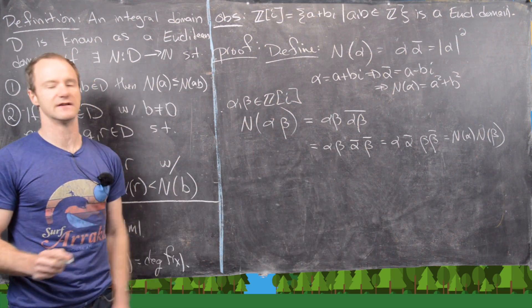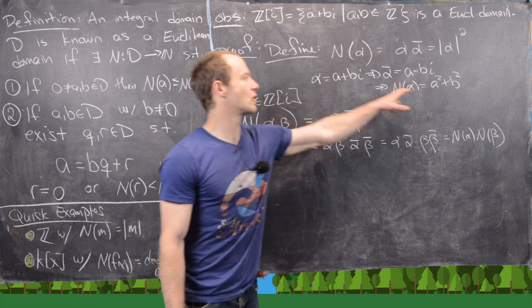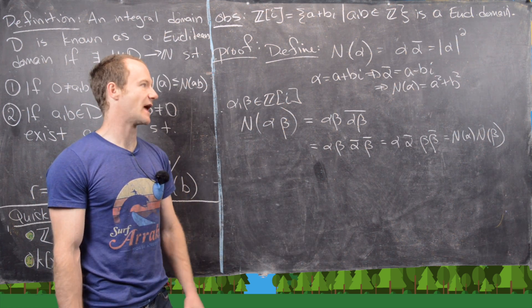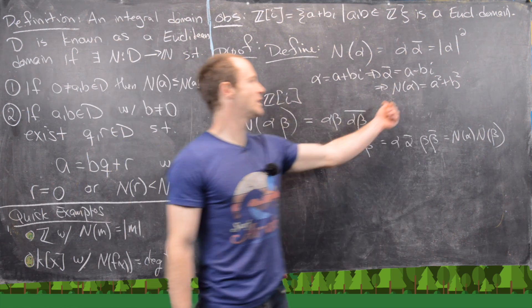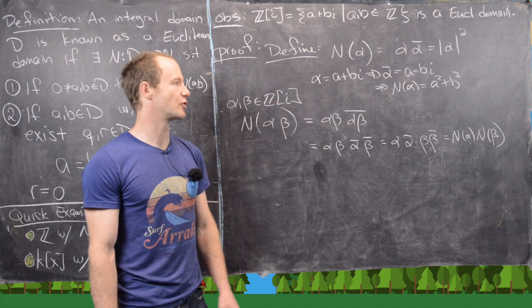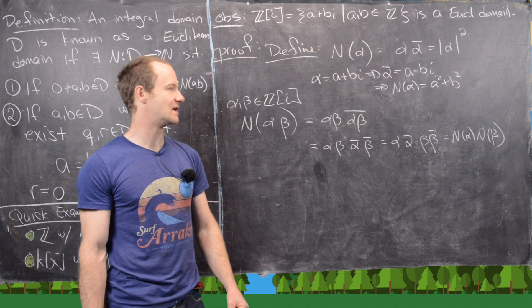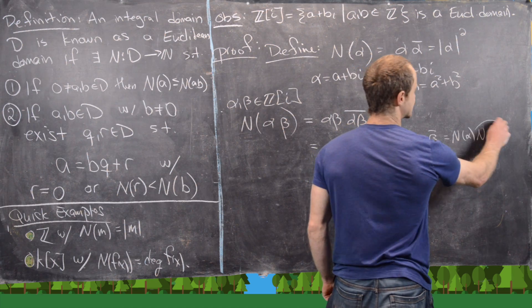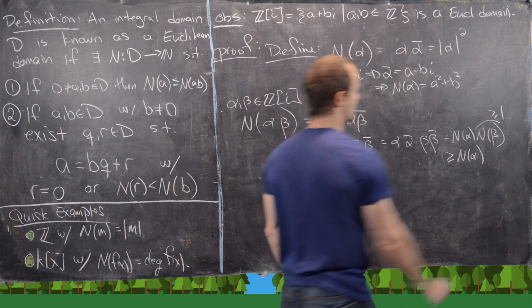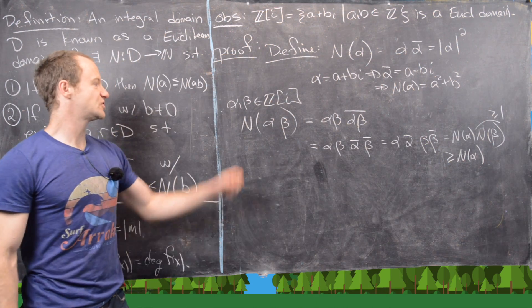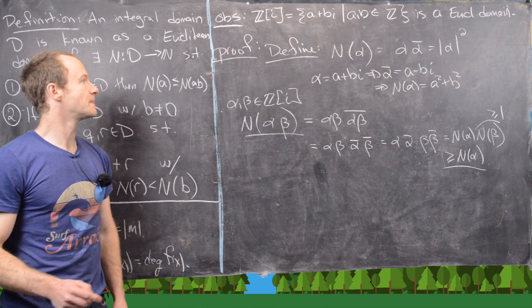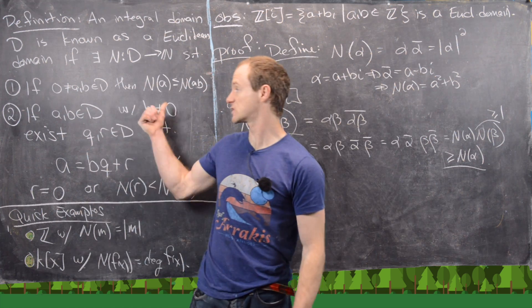The norm function is multiplicative. The norm of a Gaussian integer is only 0 when that integer equals 0; otherwise it's at least 1, since unless a and b are both 0, a² + b² ≥ 1 for integers a, b. So the norm of β is at least 1, making N(αβ) ≥ N(α), which is exactly what we wanted. That satisfies the first property.